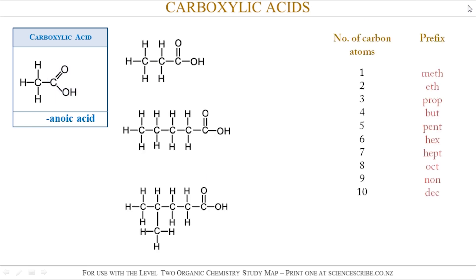To name carboxylic acids, I refer to a table and look for the longest chain of carbon atoms which contains the carboxylic acid functional group. In this first example, I've got three carbon atoms going across, so that corresponds to 'prop.' In the second example, it corresponds to 'pent' because I have five carbon atoms going across.